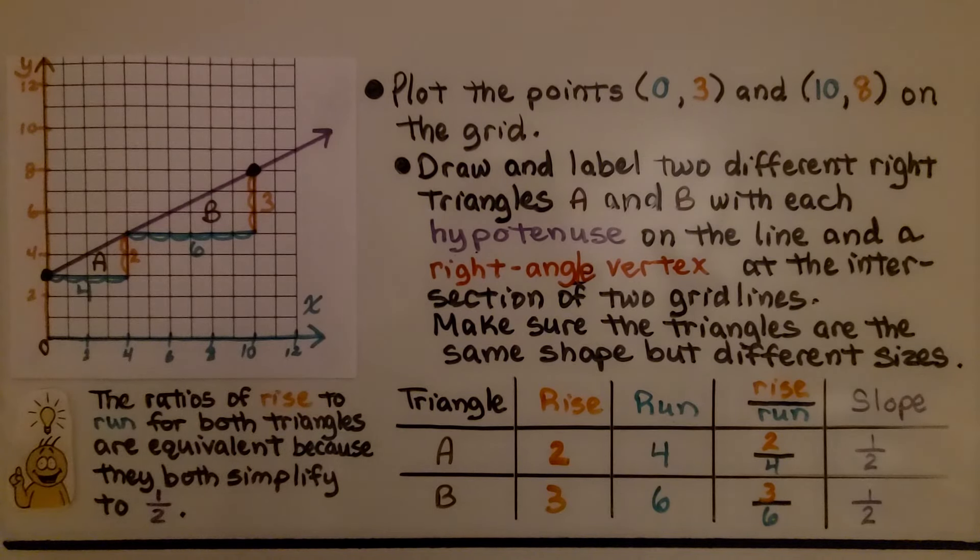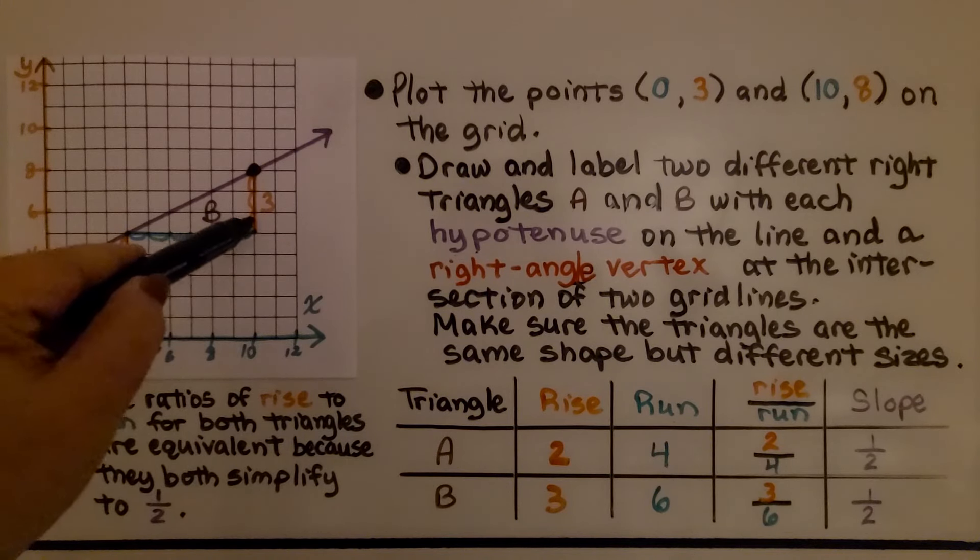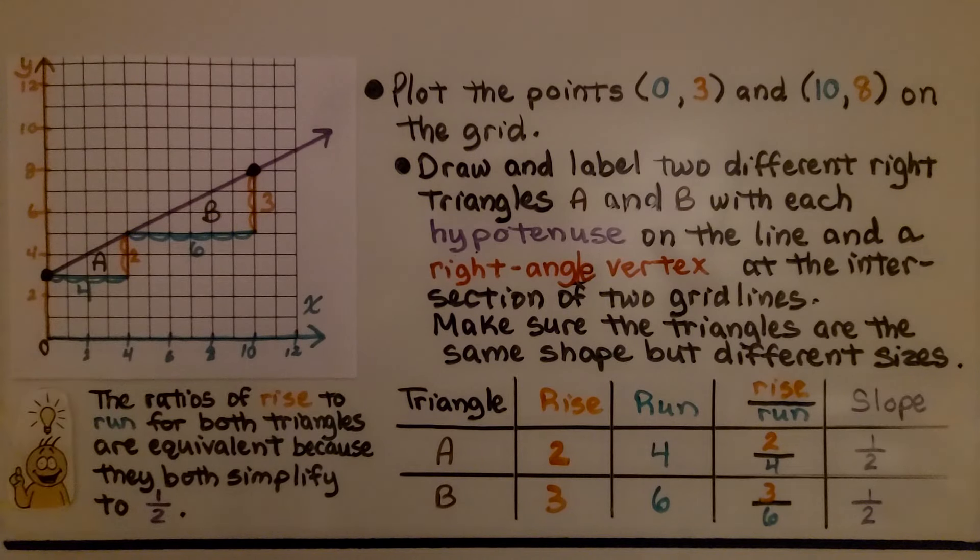We draw and label two different right triangles, A and B, with each hypotenuse on the line, and a right angle vertex. So that would be right here and right here. We'd have that right angle vertex at the intersection of two grid lines. We make sure the triangles are the same shape, but different sizes.